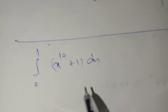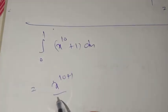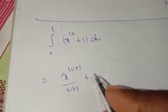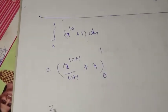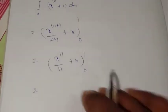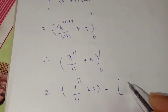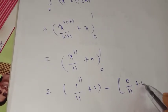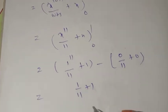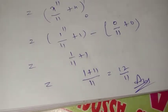Next: ∫(x¹⁰+1)dx from 0 to 1. Using the formula ∫x to the power of n dx equals x to the power of n+1 by n+1, plus ∫1 dx equals x, with limits 0 to 1. That equals x to the power of 11 by 11 plus x. Substituting the upper limit: 1 by 11 plus 1, minus lower limit: 0 by 11 plus 0. Taking LCM 11, that is 1 plus 11 by 11 equal to 12/11.